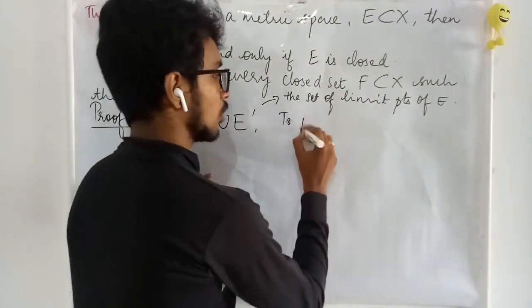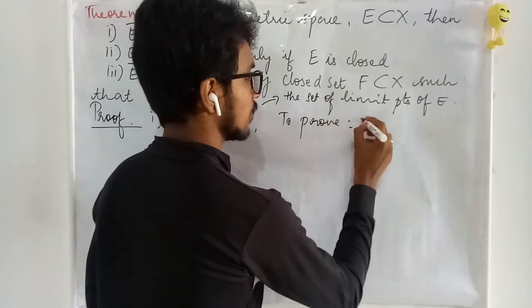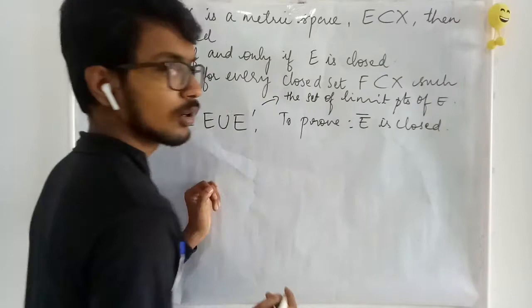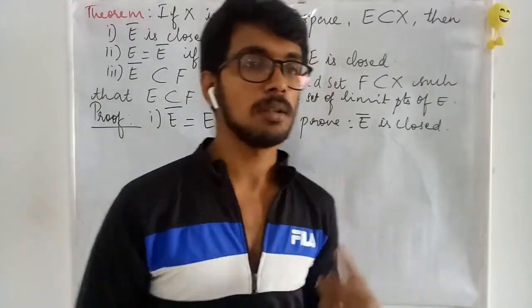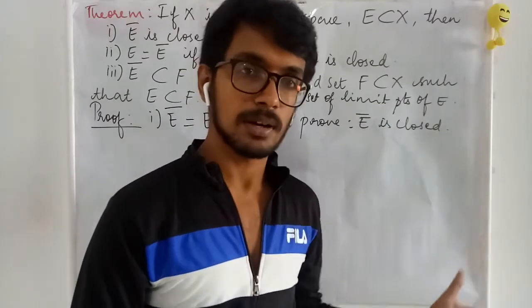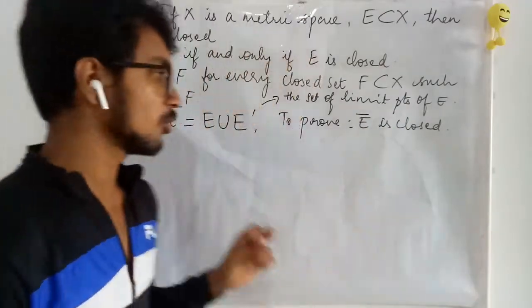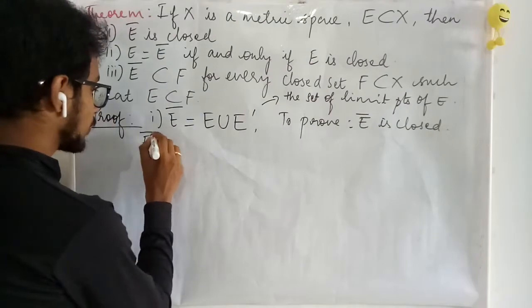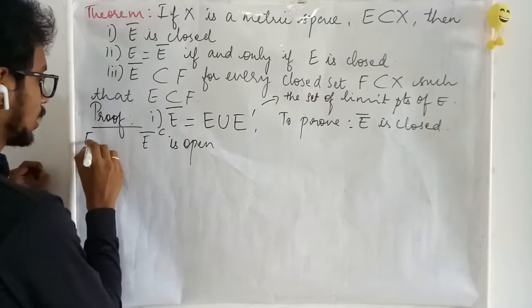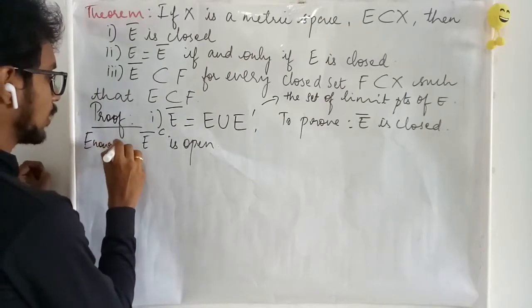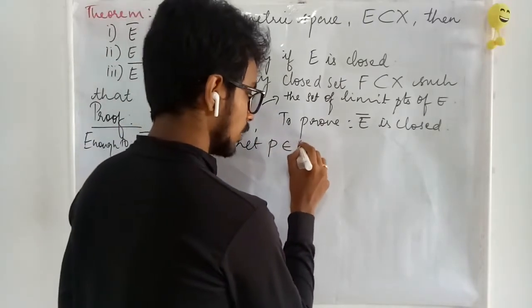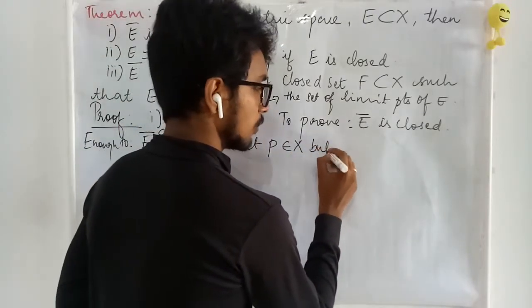To prove E-bar is closed, we can either take an arbitrary limit point of the set and show it belongs to E-bar, or we can prove that E-bar complement is open. We will take the second approach: pick a point in the metric space that is not a member of E-bar.